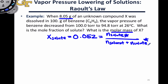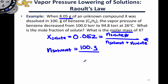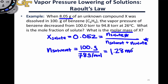The moles of solvent we actually know. We know that 100 grams of benzene were used to make this solution, and we know the molar mass of benzene — it's C6H6, meaning that the molar mass is 78 grams per mole. This means we have 1.28 moles of the solvent in solution.